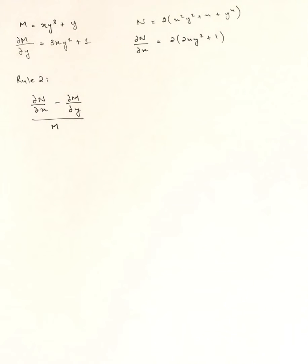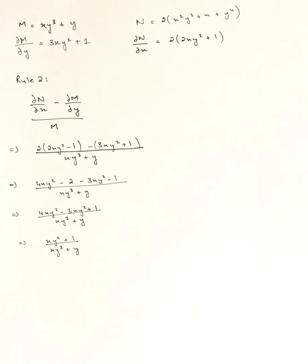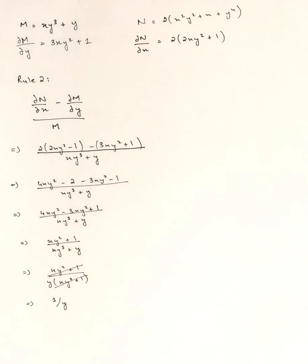Rule 2: (∂N/∂x − ∂M/∂y) / M gives (xy² + 1) / (xy³ + y). Taking y common in the denominator, this simplifies to 1/y, which is a function of y alone. So Rule 2 is satisfied.